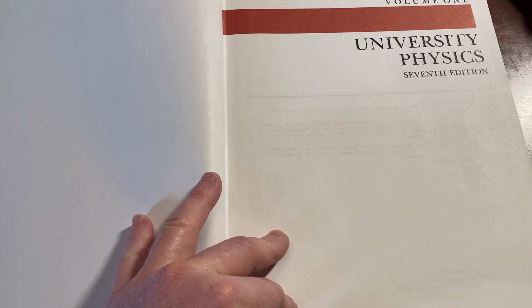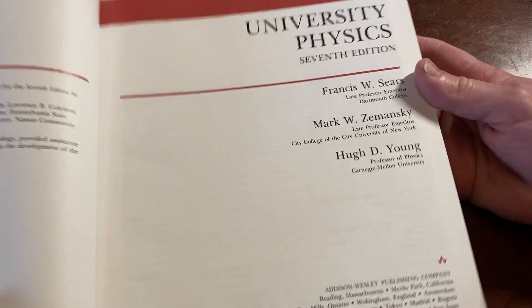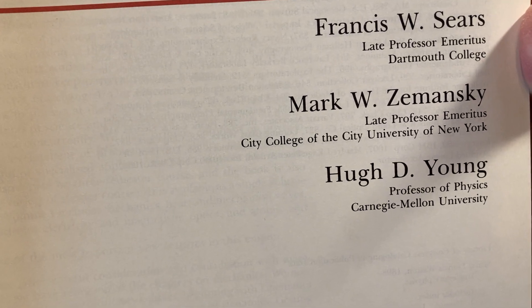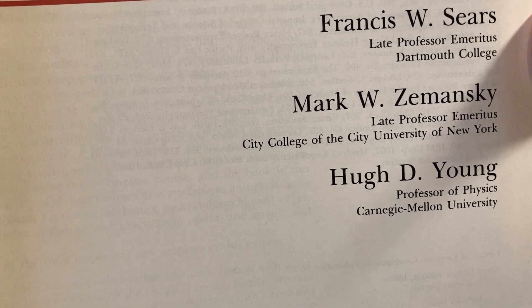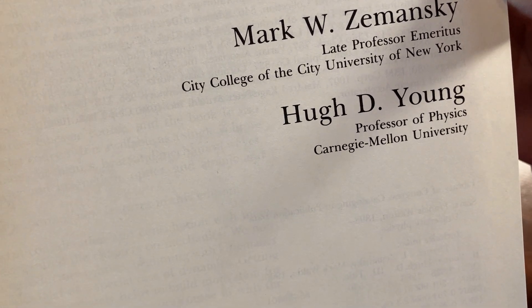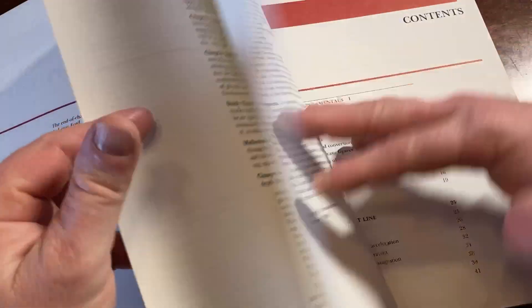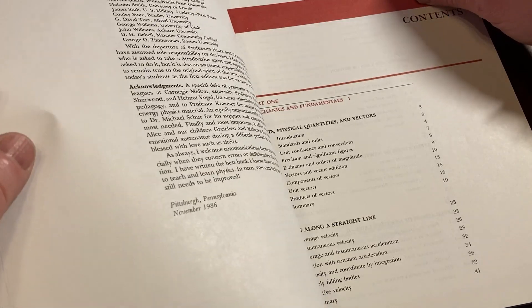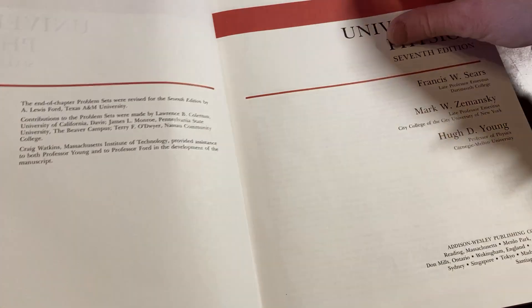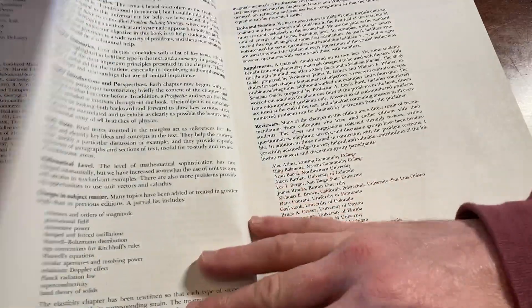Volume 1, University Physics, 7th edition. Here are the people who wrote the book. Let's see if there's a date on when this book was published. 1986. Yeah, 86 is when they wrote this book. That's a long time ago. It's been a while. 1986 is a while ago.